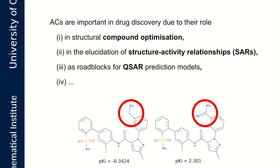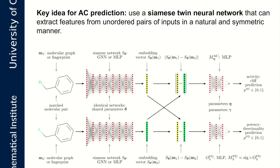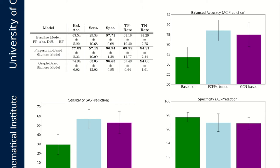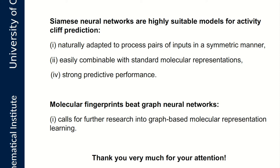Our key idea for the prediction of activity cliffs is to use a Siamese twin neural network that can extract features from unordered pairs of inputs in a natural and symmetric manner. Our model can be seamlessly integrated with standard molecular representation techniques such as graph neural networks or molecular fingerprints. We conduct numerical experiments for the prediction of activity cliffs in a dataset of blood coagulation factor 10A inhibitors. We show that both a graph-based and a fingerprint-based version of our method achieve strong predictive performance and outcompete a related baseline model. We conclude that Siamese neural networks are highly suitable models for activity cliff prediction, naturally adapted to process pairs of inputs in a symmetric manner. Furthermore, molecular fingerprints outperform graph neural networks in our application, which calls for further research into graph-based molecular representation learning.